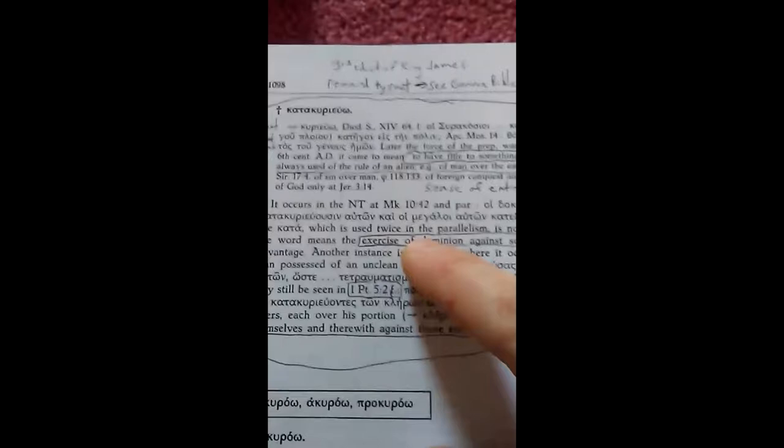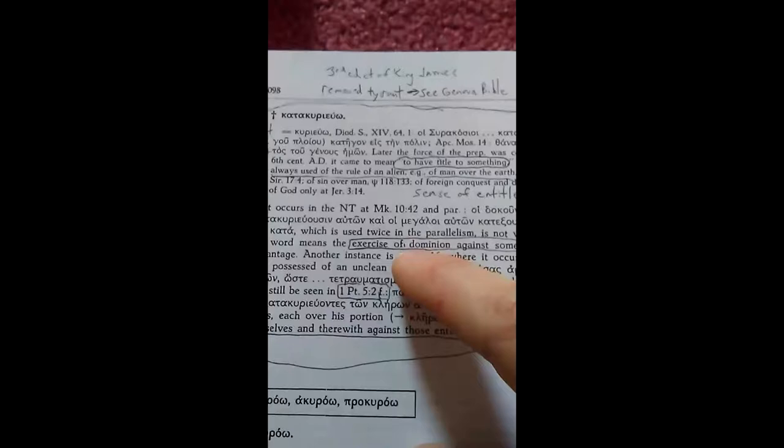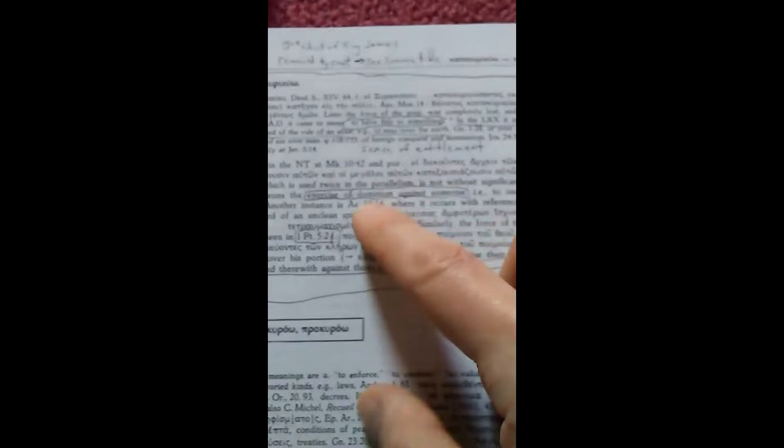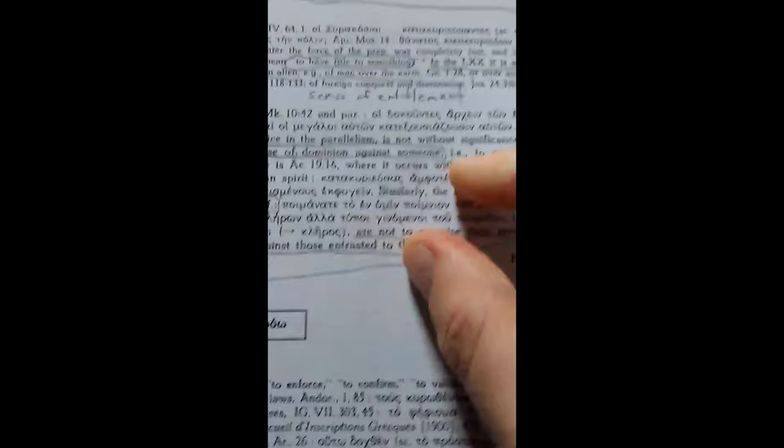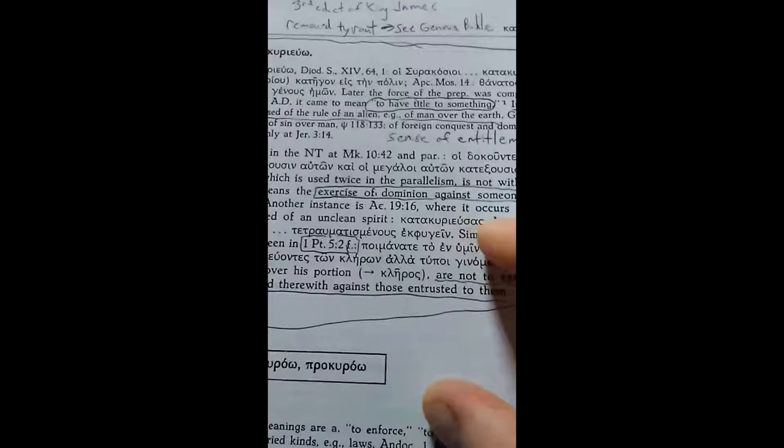So in the Septuagint, it is almost always used of the rule of an alien, of man over the earth or over animals or of sin over man, of foreign conquest and domination. It occurs in the New Testament at Mark 10:42. Here, the kata, which is used twice in the parallelism, is not without significance, and the word means the exercise of dominion against someone.